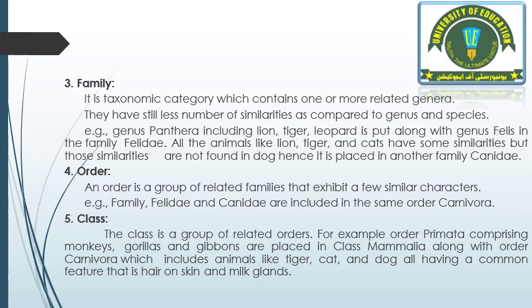Number five is class. Class is a group of related orders. For example, order Primates comprising monkeys, gorillas, and gibbons are placed in class Mammalia, along with order Carnivora which includes animals like tiger, cat, and dog. They all share a common feature — hair on skin and milk glands — and that's why class is a group of related orders.